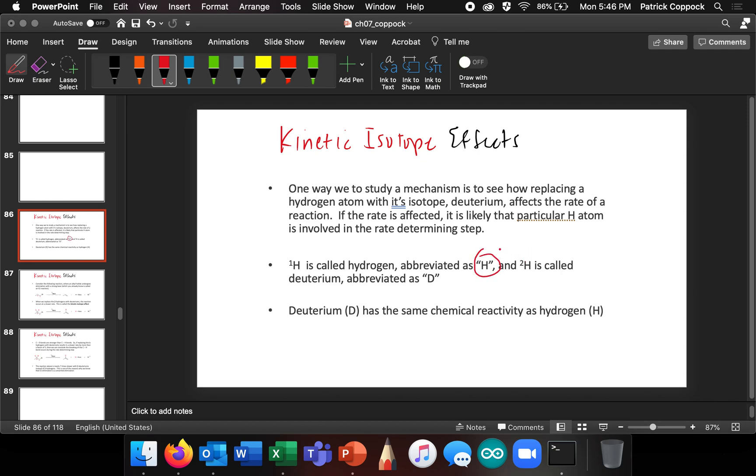So hydrogen typically only has one proton, no neutrons. If hydrogen has one neutron, that has two nuclear particles, then we call that deuterium. We discussed that when we're talking about spectroscopy. Deuterium now has the same chemical reactivity as hydrogen, but it doesn't have the same kinetics as hydrogen. It reacts more slowly.